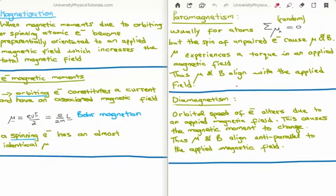Let me define magnetization. This is when the magnetic moments due to orbiting or spinning atomic electrons become preferentially orientated to an applied magnetic field, which increases the total magnetic field. We essentially have two types of magnetic moments because a current loop constitutes a magnetic dipole with a magnetic moment, and we can think of an orbiting or spinning electron which is moving very quickly as approximating a current, which therefore has a magnetic moment and a field.